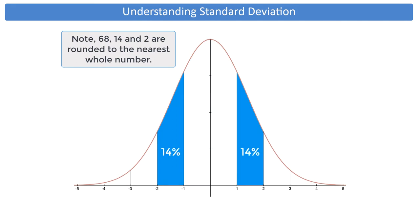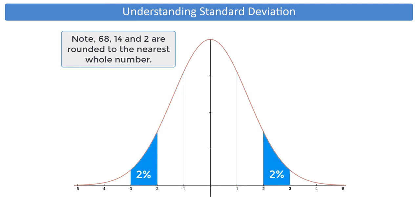The area under the curve between 1 and 2 deviations away is approximately 14%, and between 2 and 3 is approximately 2%.